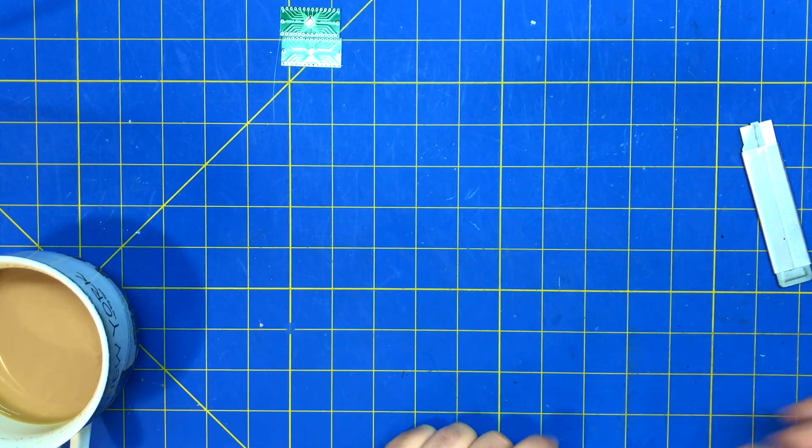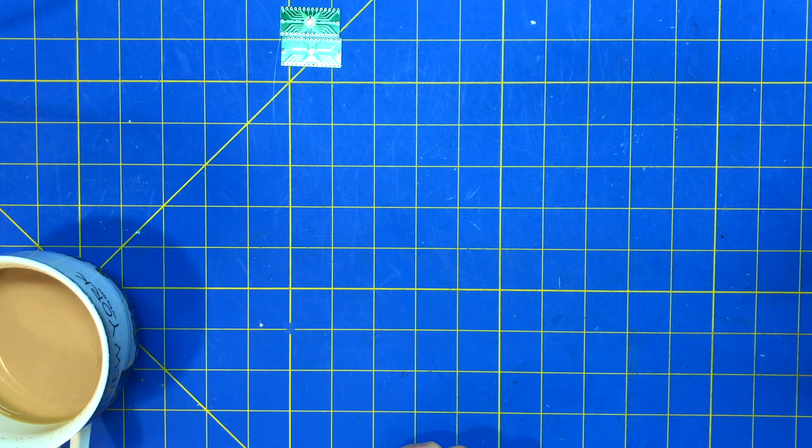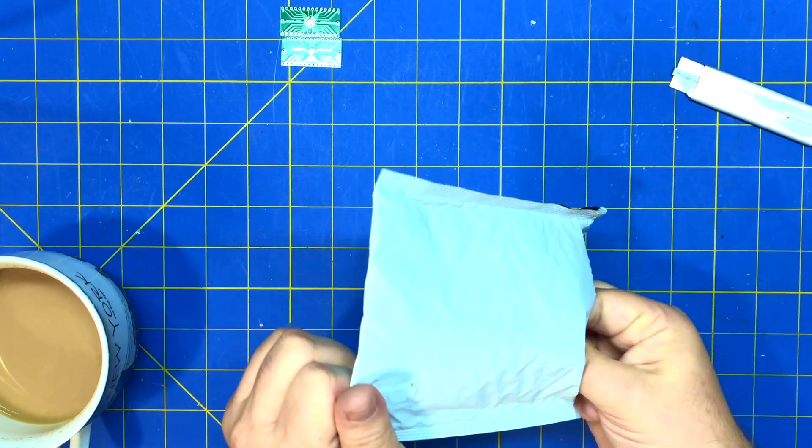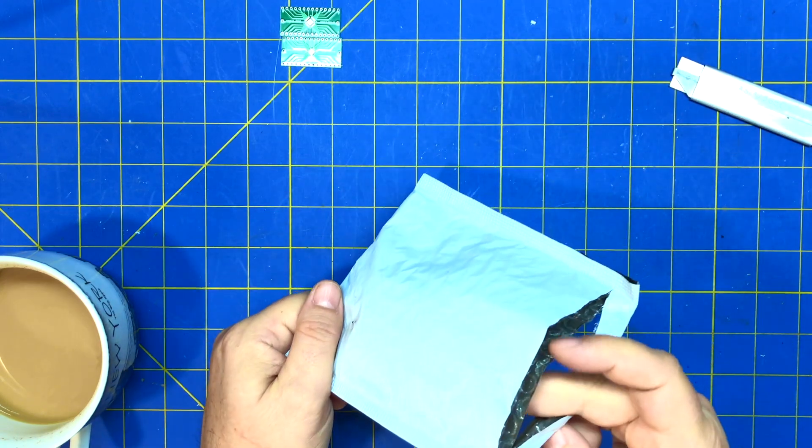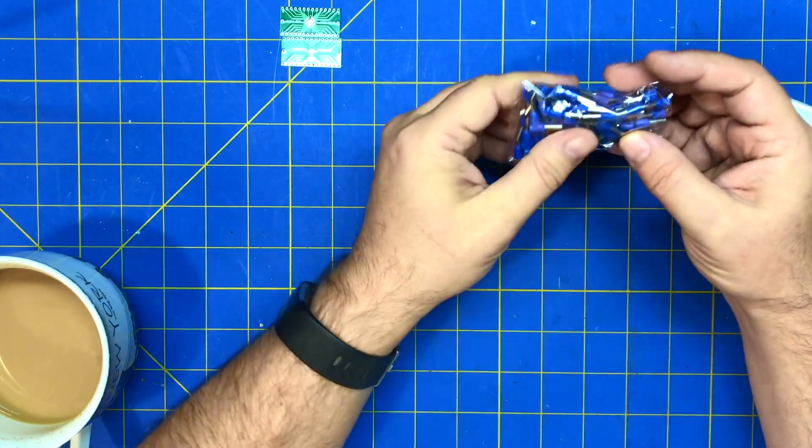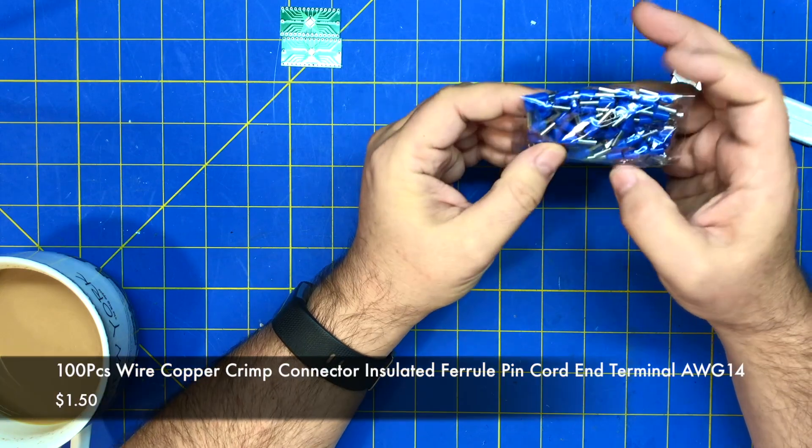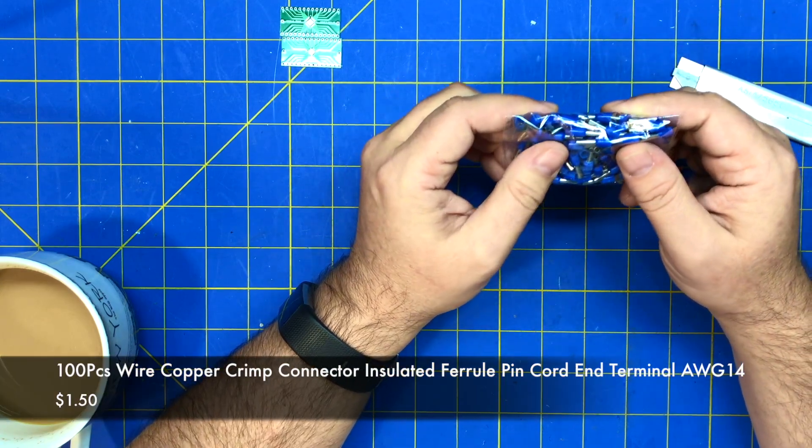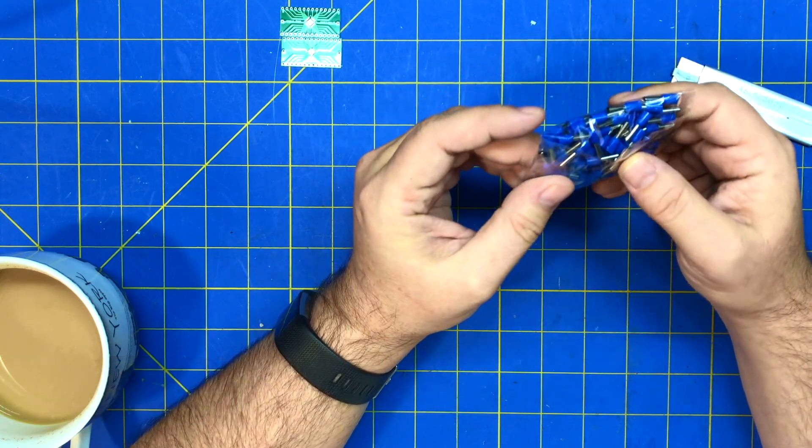I don't have that kind of breakout board, so. All right, next, insulated terminal. All right, so these are those ferrule crimpers.